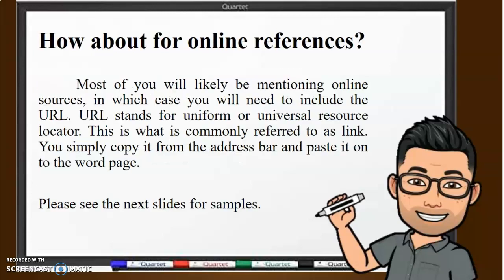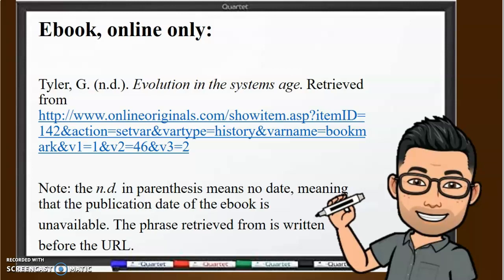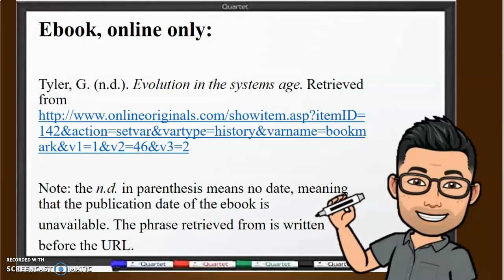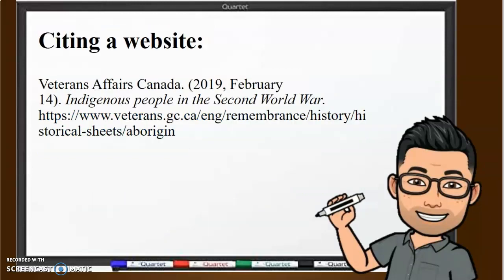One important thing kapag sinusulat natin yung title, mapapansin nyo lagi siyang naka-italicize — meaning nakatagilid. Control-I lang yan. Highlight nyo lang sa Word tapos Control-I, ganun lang siya kadali. Itong URL, kapag meron kayong mostly online references — and that's completely fine. Given the pandemic, you're not really expected to magpunta sa mga library, so most likely everyone's references will be online. So please review kung paano yung format noon — last name, title ng e-book in this case, tapos yung URL, uniform or universal resource locator. Yung nasa address bar sa internet browser nyo, kakopy nyo lang yan, tapos ipapaste nyo dun sa Word document. I-review nyo lang tong part na to.